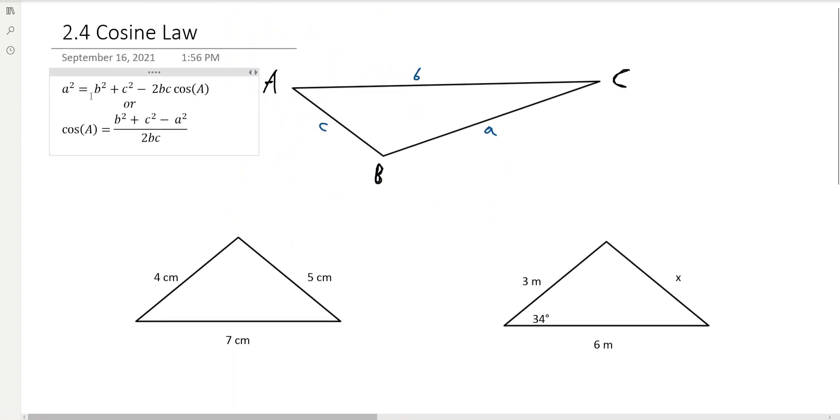So, these are the two formulas given to you on your formula sheet that have to do with the cosine law. You'll notice that we're using cos, and you'll notice that my triangles here are not right angle triangles, they could be any set of angles.